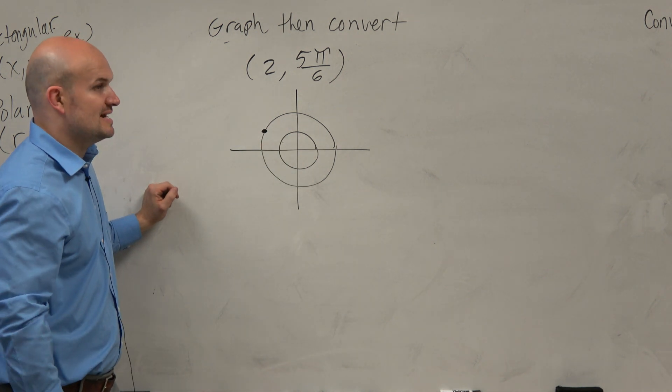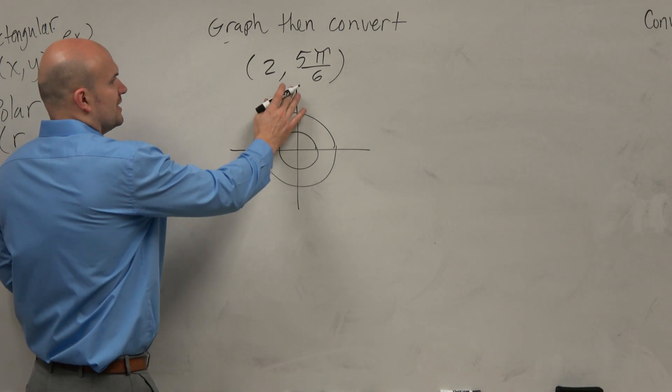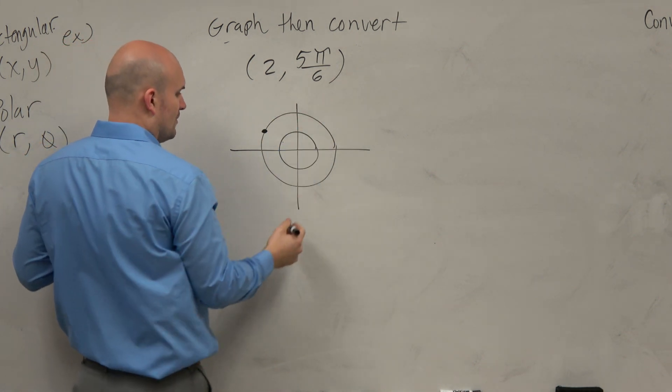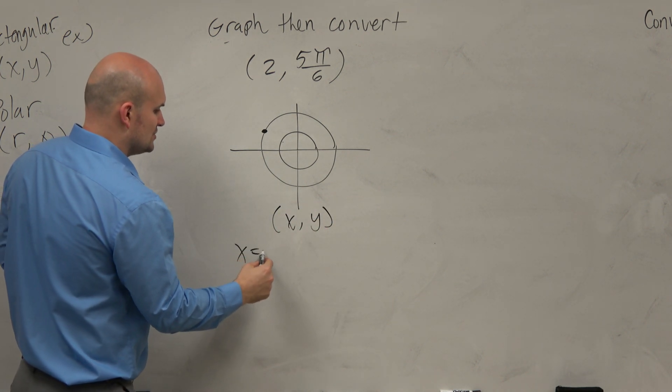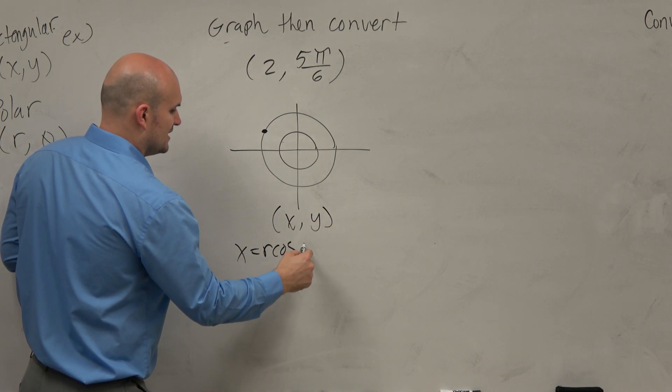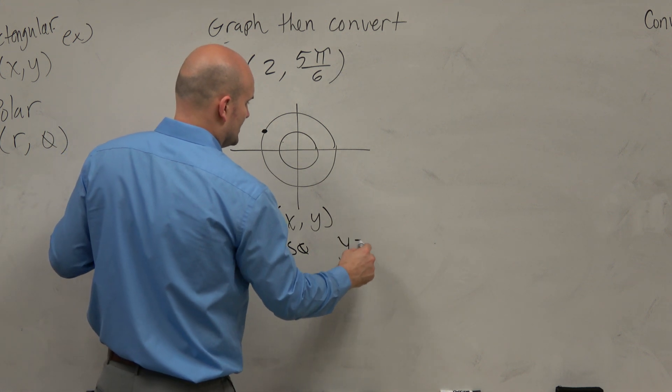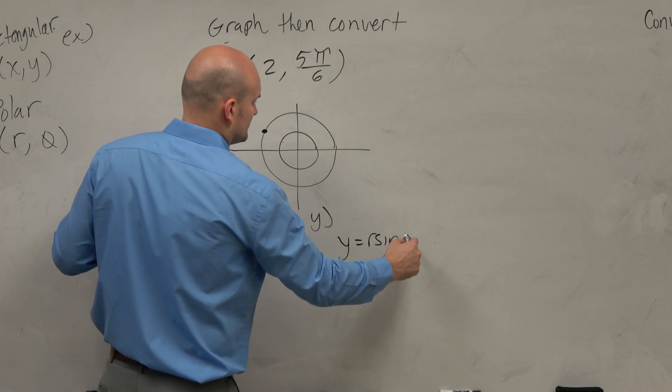The next thing is I ask you to convert. So again, we want to convert this to x and y's. So x equals r times cosine of theta, and y equals r times sine of theta.